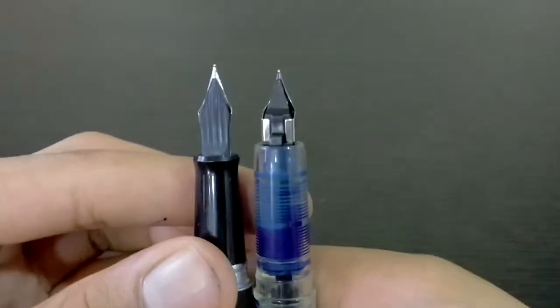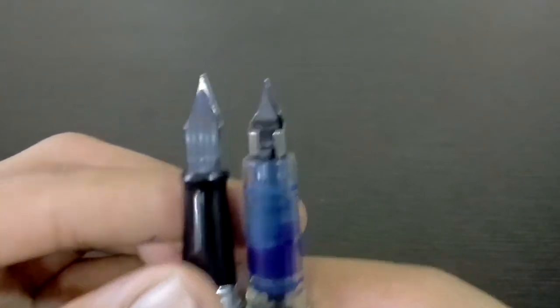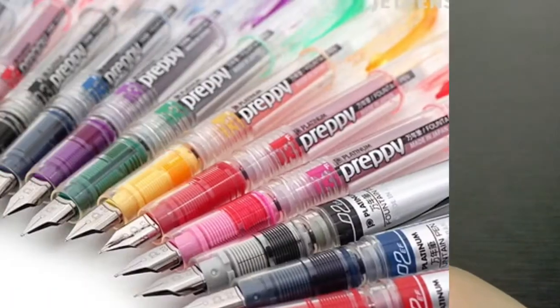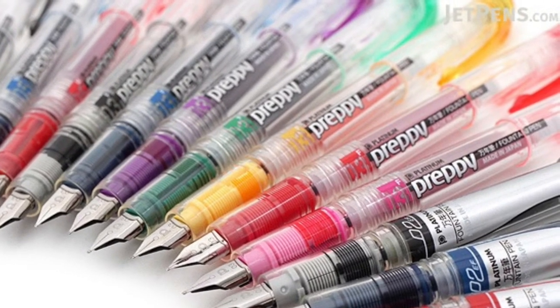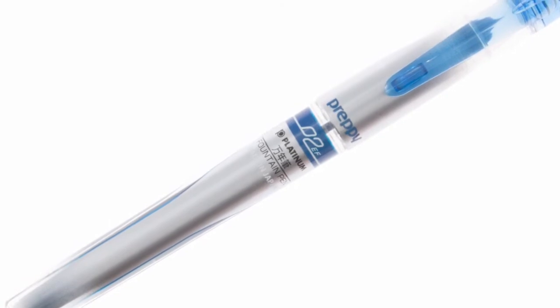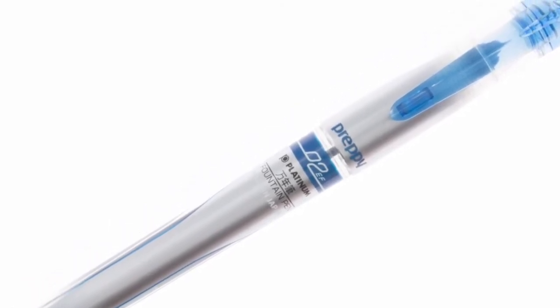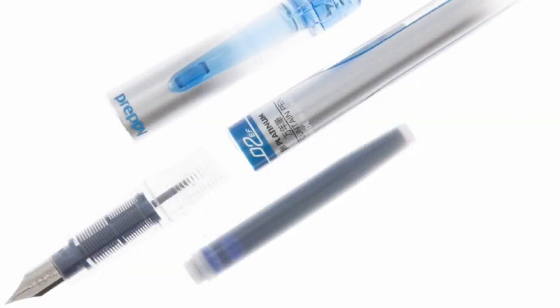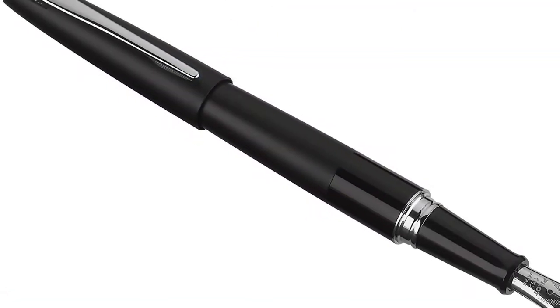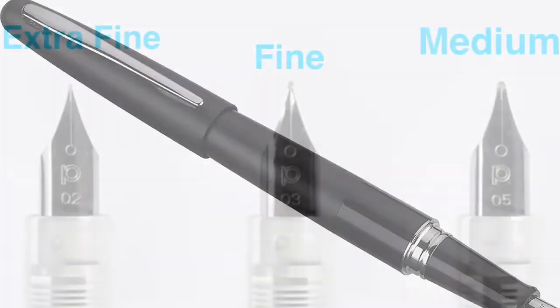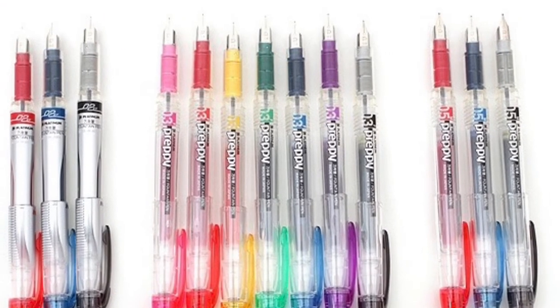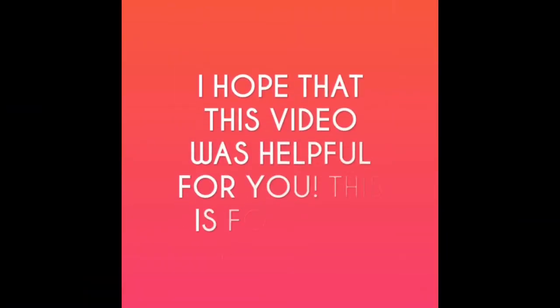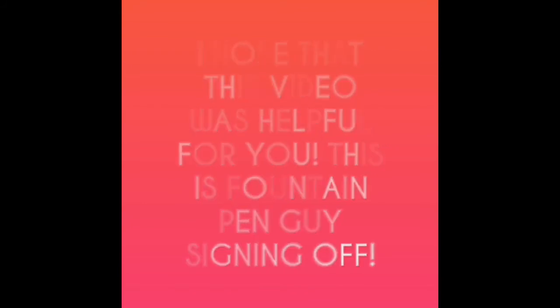In terms of backside, the nib is of course very different but the points are almost the same. The whole point of this video was to give you a brief idea that the Platinum Preppy can be compared to many different fountain pens, so you don't only limit yourself to the Platinum Preppy. You can extend your options to many different fountain pens while purchasing, such as the Pilot Metropolitan, the Platinum Preppy 05 and the 03. There are many other different fountain pens in the market. I hope that this video was helpful for you. This is Fountain Pen Guy signing off.